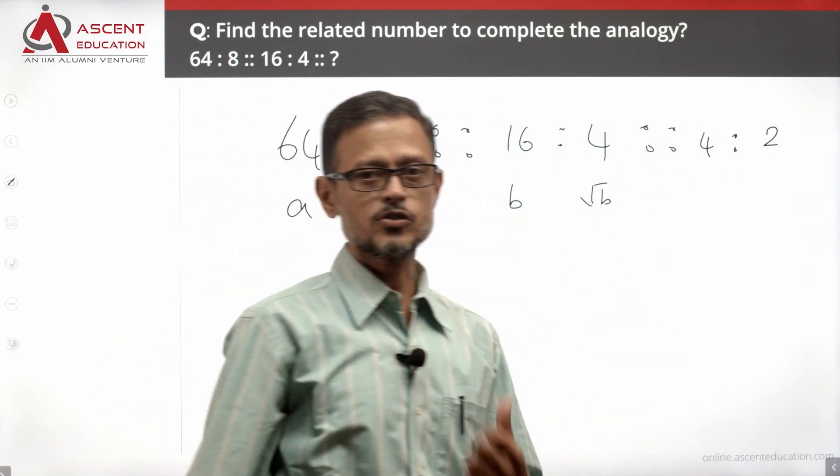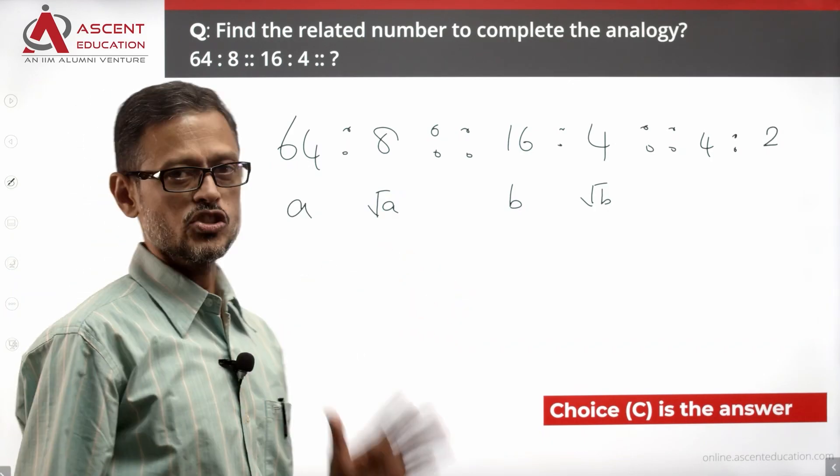the next number in the analogy is going to be a 4. So answer option that is correct is basically choice C.